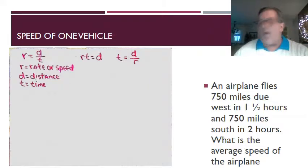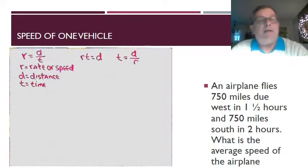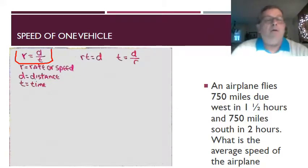Before we get into the problem itself, our basic formula for determining speed or rate is rate equals distance over time. So we got r equals d over t, where r equals the rate or speed, d equals the distance, and t equals the time.